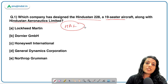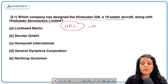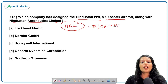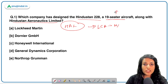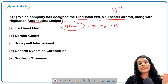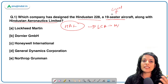HAL basically designs light compact aircraft for the Ministry of Civil Aviation or the Indian Air Force. This 19-seater aircraft that the question is asking about is actually a civilian aircraft.